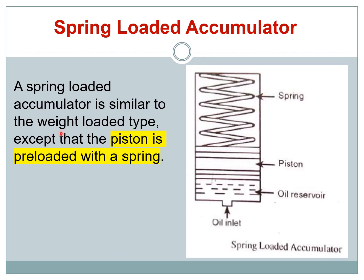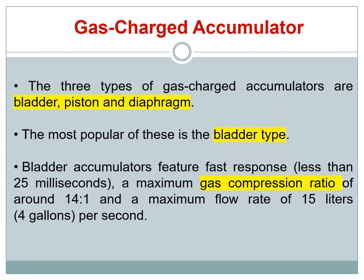Another type of accumulator is similar to the weight-loaded type, except instead of using a dead weight you use a spring. A spring is a mechanical way of generating potential energy, and it creates pressure inside. You have an oil reservoir, a spring, and a piston. The piston is preloaded with the spring, and the spring ensures that the oil in the reservoir is constantly pressurized.